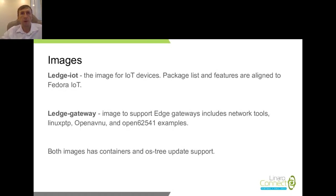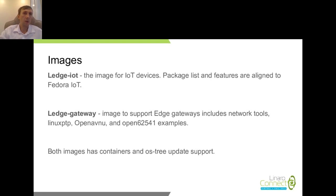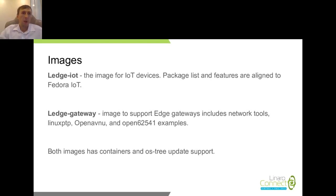For LRP we have two types of images: one for IoT devices and one for gateway devices. The difference is the set of applications. The IoT image is very similar to the Fedora IoT package set, and the gateway image includes network protocols like PTP, OpenAVNU, and applications more suited for gateways. Both images support containers and OStree updates.